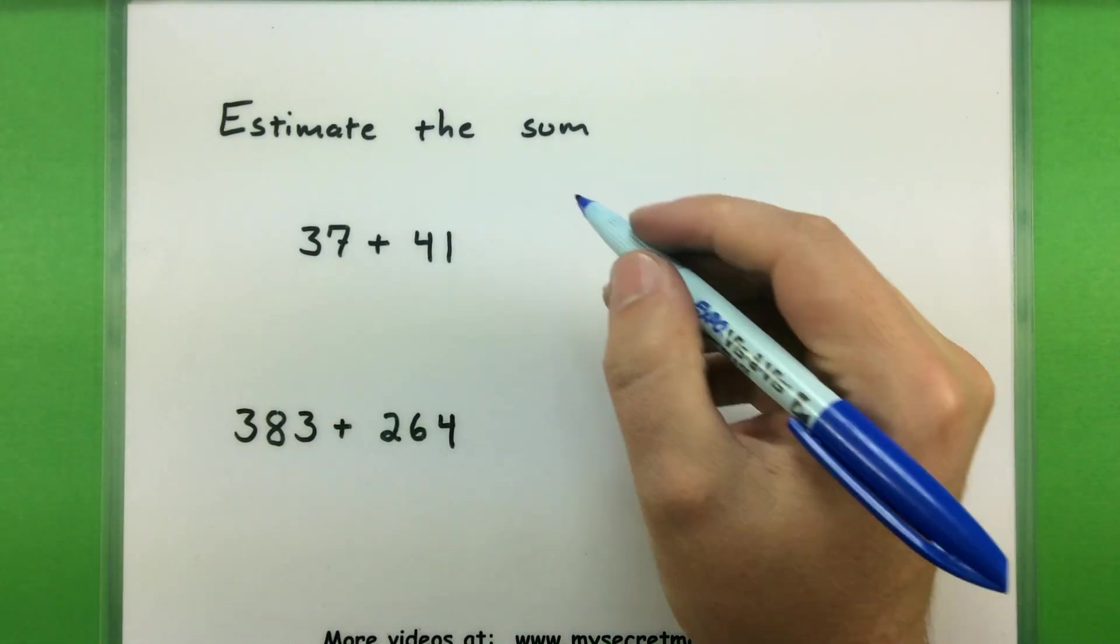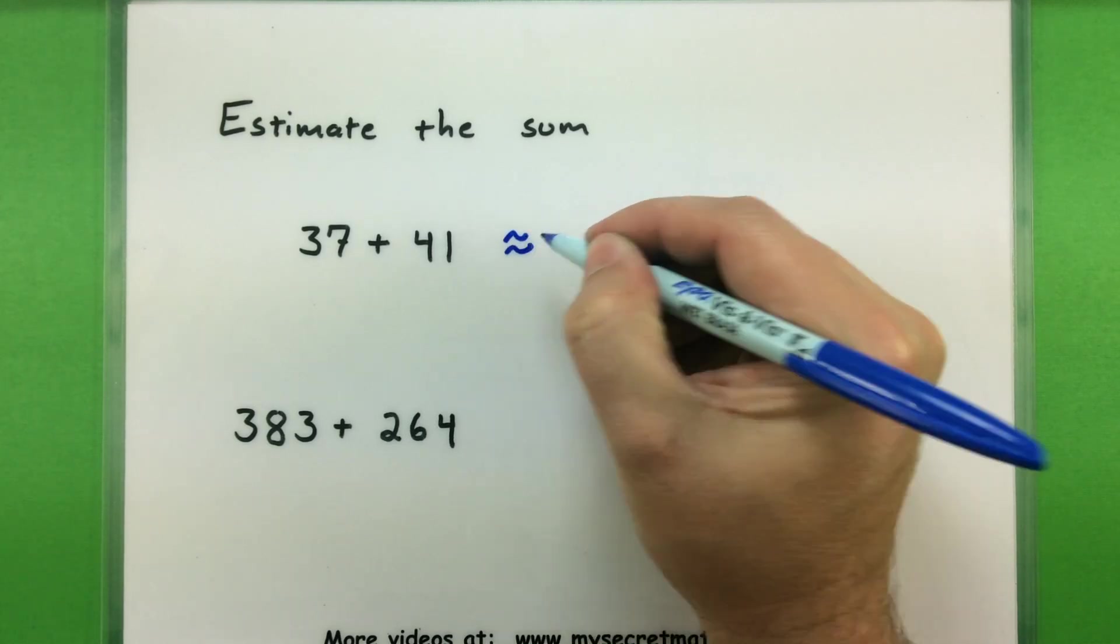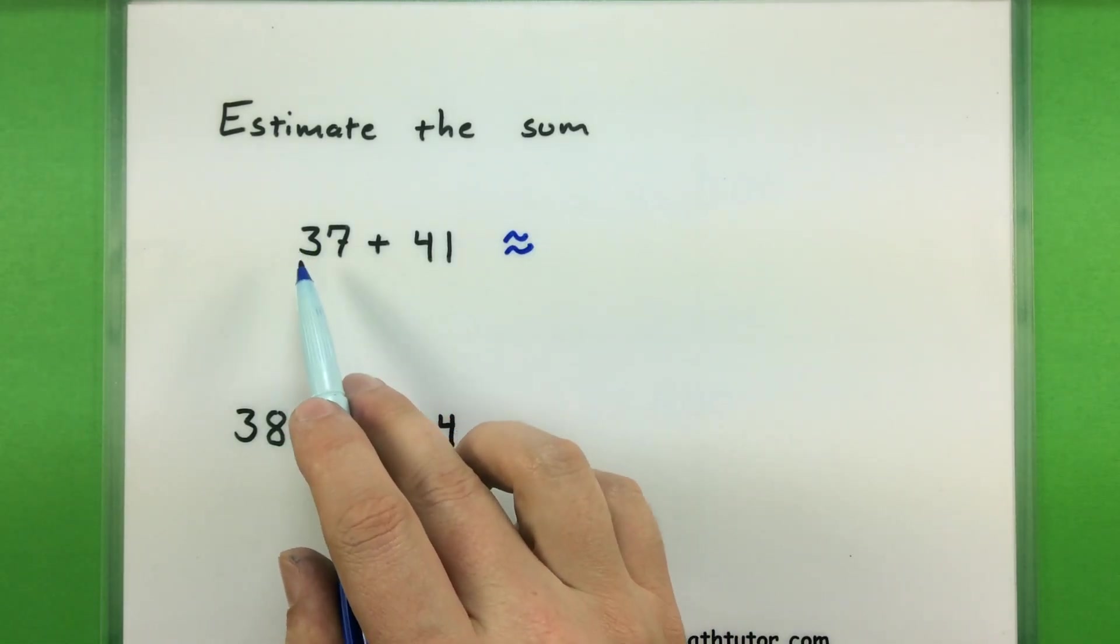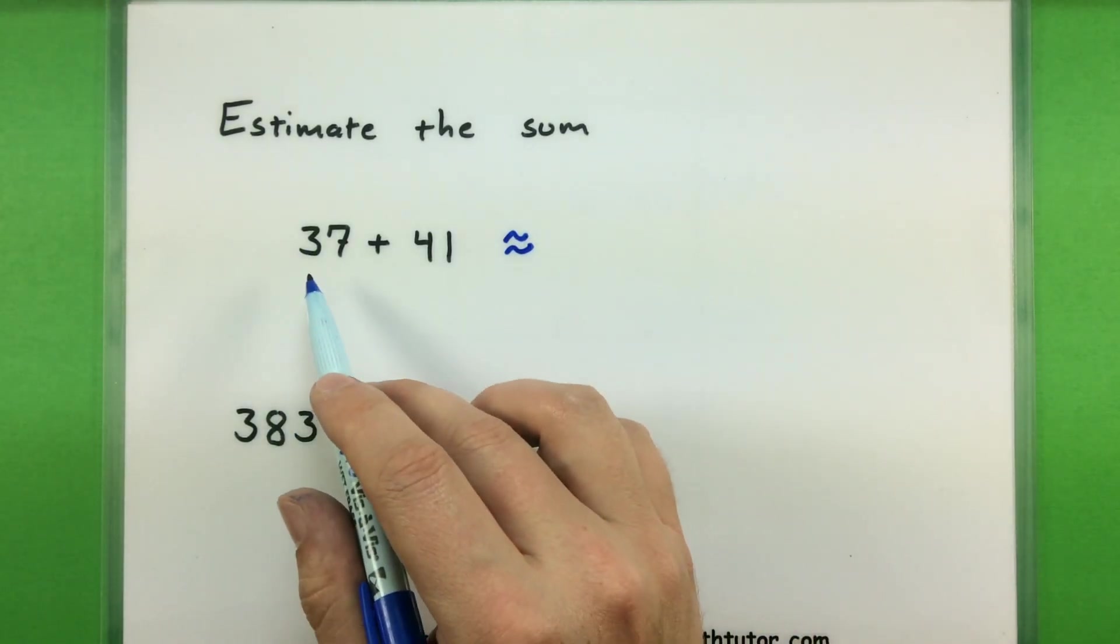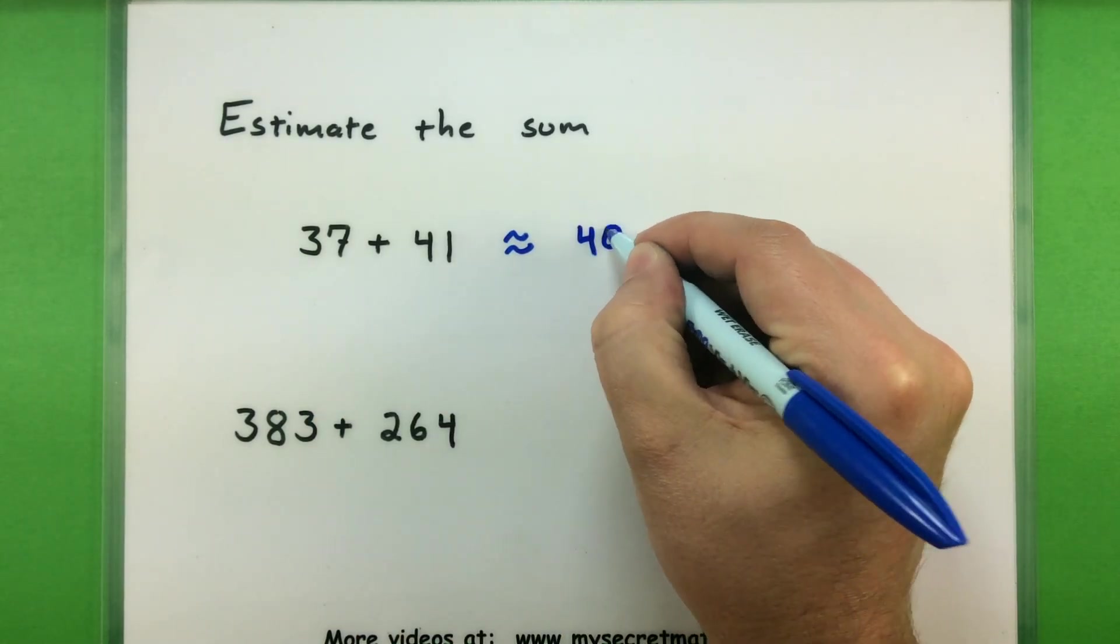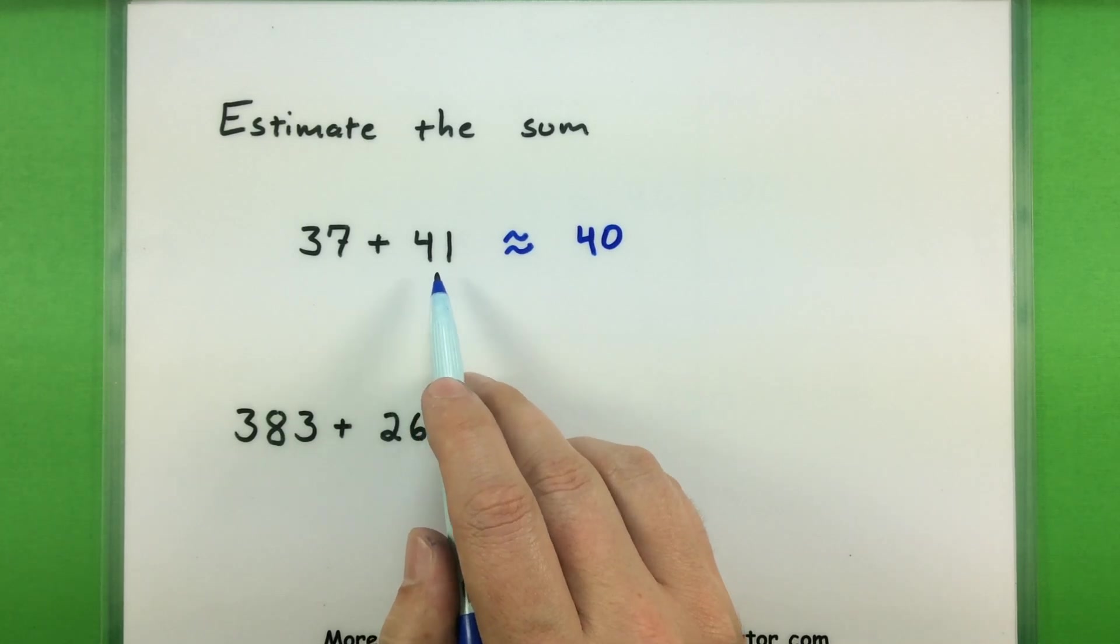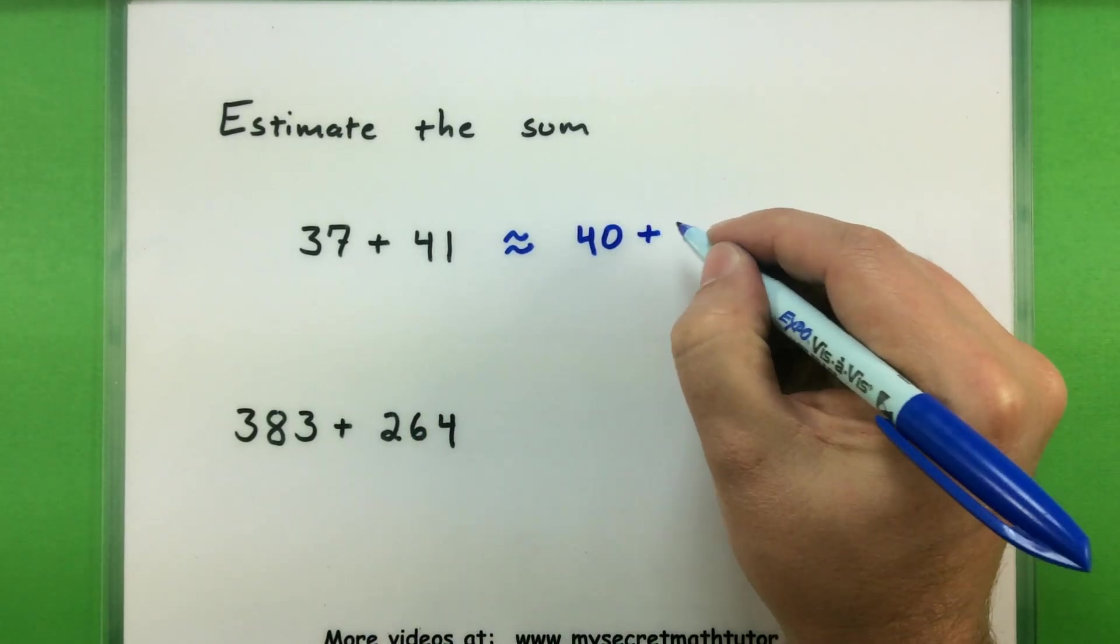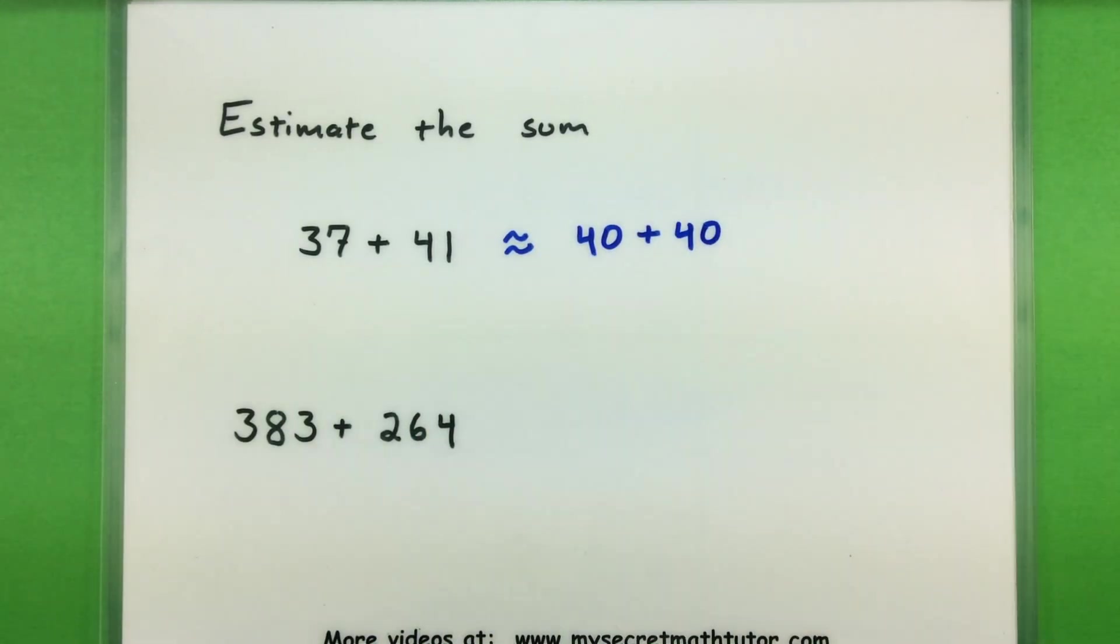And to start off this process what we'll really do is we'll round each of the individual numbers. So I'm looking at 37 and looks like we need to round that up to 40. The 41 will get rounded down to 40. And if you're not sure about that rounding process definitely check out my earlier videos on how that works out.